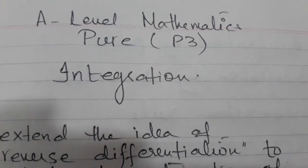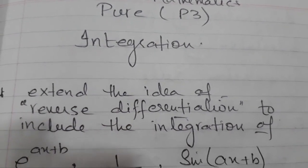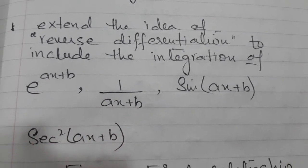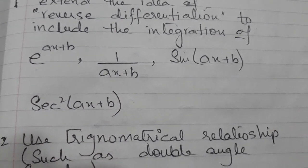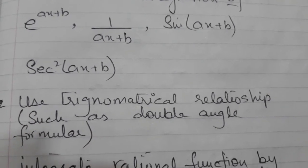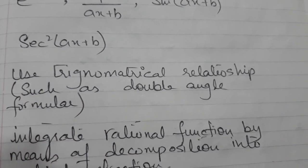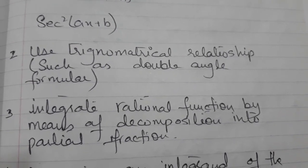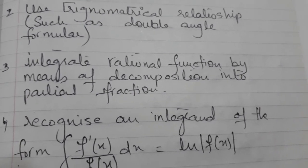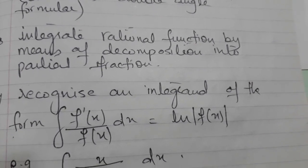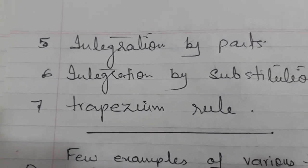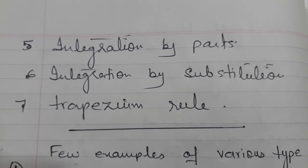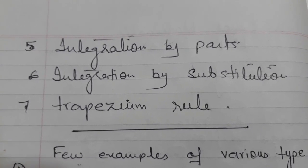First, the expectation is that you should know the integration of all the basic functions you have learned in previous years — in year 11 or first year. Second, in integration we will use trigonometric double angle formulas to change the form of the function and then integrate. Third, rational function integration by decomposition into partial fractions. We will also cover integration by parts, integration by substitution, and the trapezium rule. I have covered up to integration by parts in three videos, and I will give the link of each video in the description below.